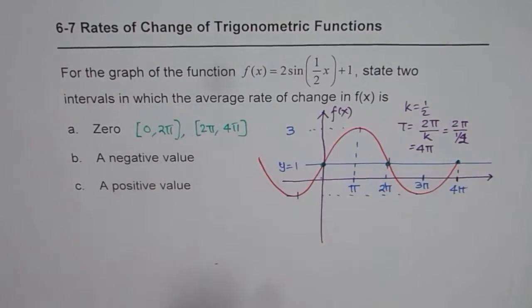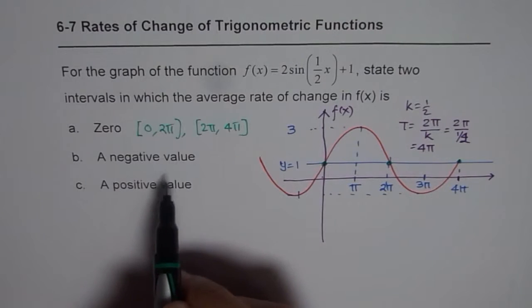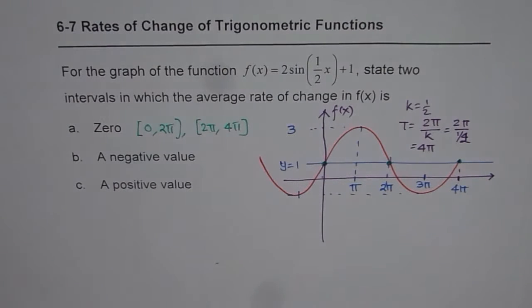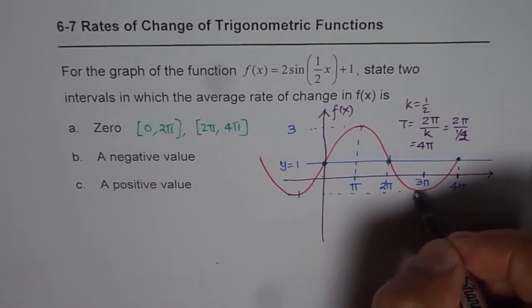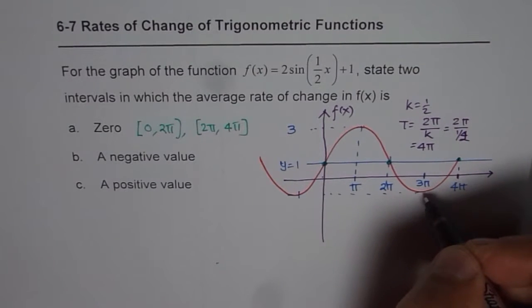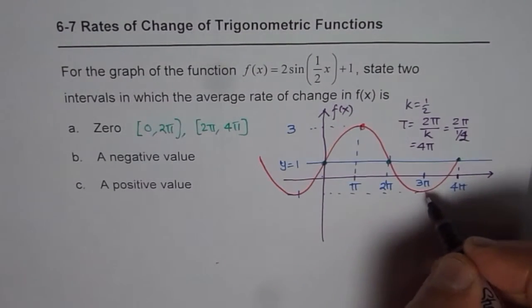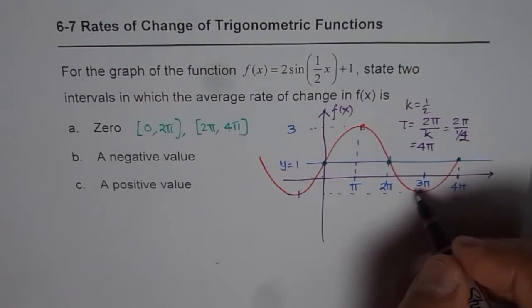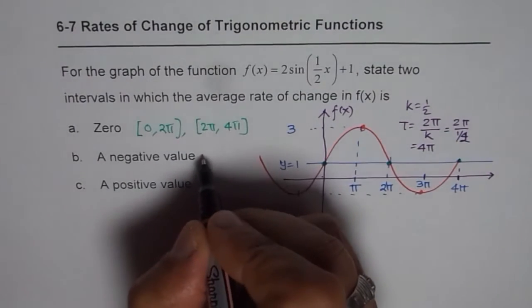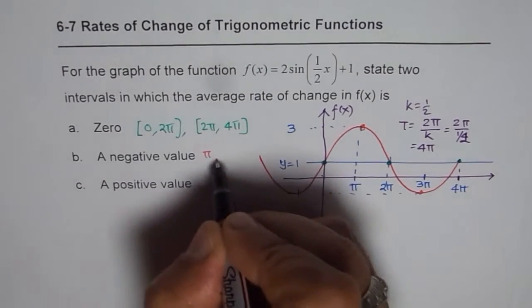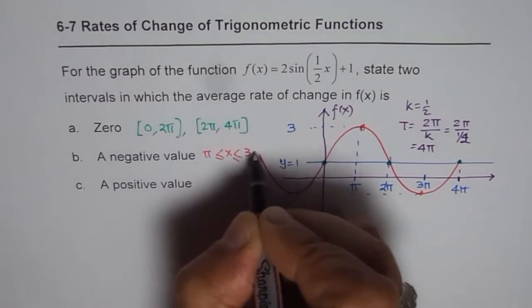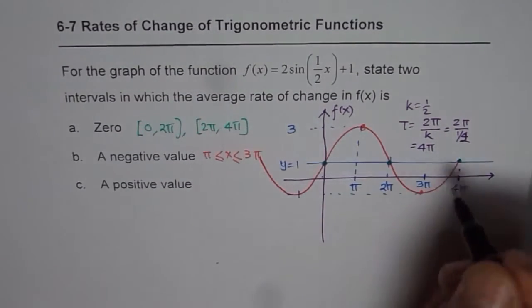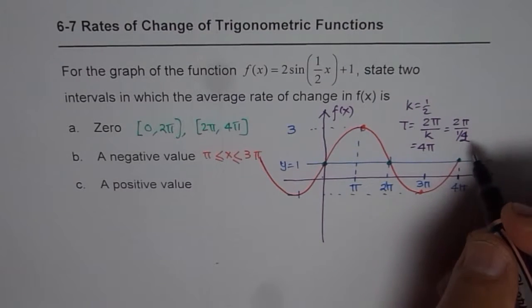So that will give us 0 average rate of change. As far as the negative value is concerned, for negative value, we know tangent should be going downwards. So any points in this side will give us negative value. So if I take from, for example, pi to 3 pi, then I get a negative rate of change. So I can write this as from pi where x is between pi and 3 pi. That becomes one of the points.